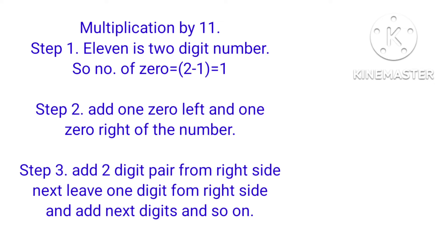For multiplication by 11 there are three steps. Step 1: 11 is a two-digit number, so number of zeros equals 2 minus 1, which is 1. Step 2: add one zero left and one zero right of the number. Step 3: add pairs of two digits starting from the right side, then leave one digit from the right and add the next pair, and so on.